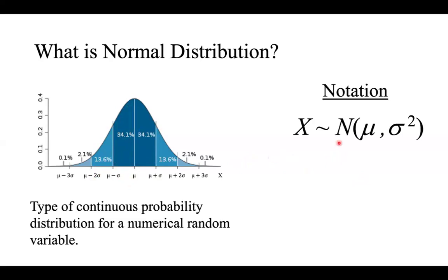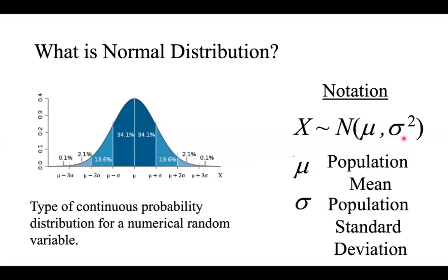We need to translate this into a notation, and we see that there's the mean, and that would be the population mean, and the sigma would be the population standard deviation.